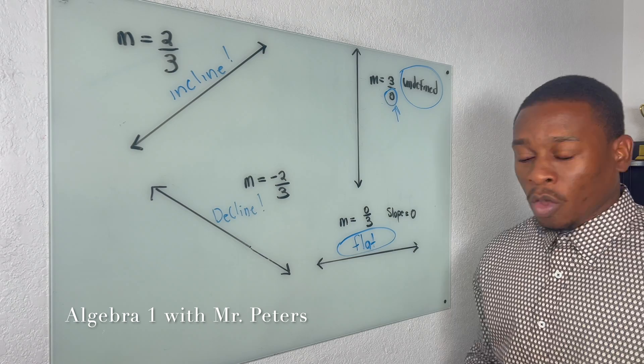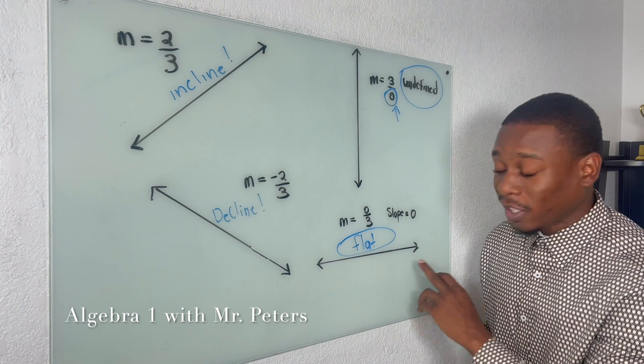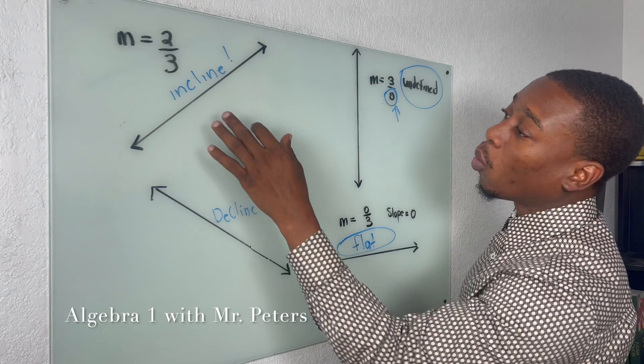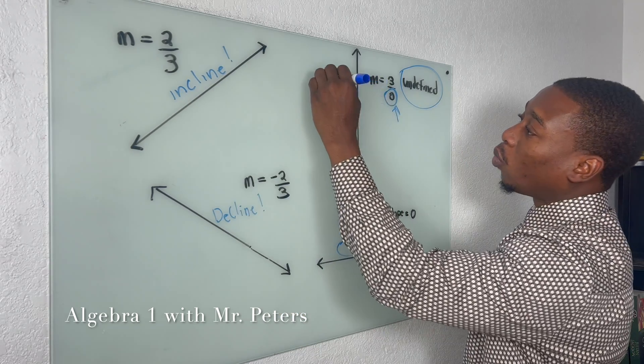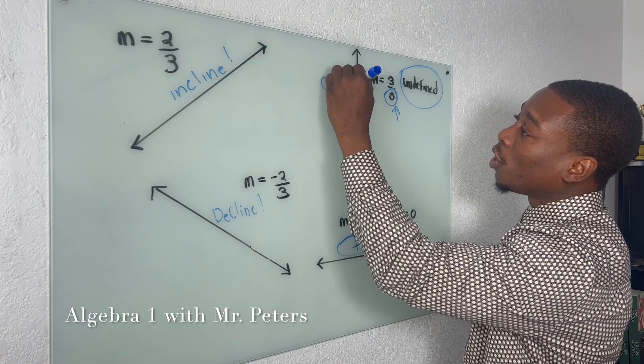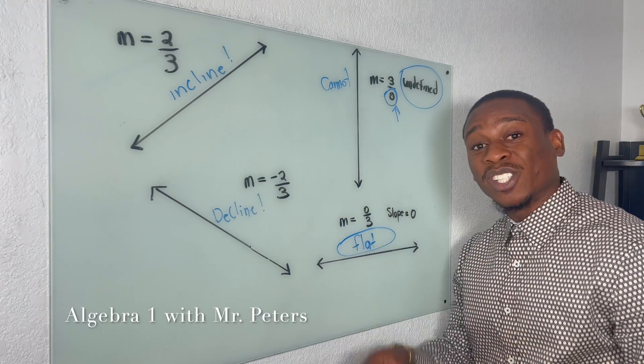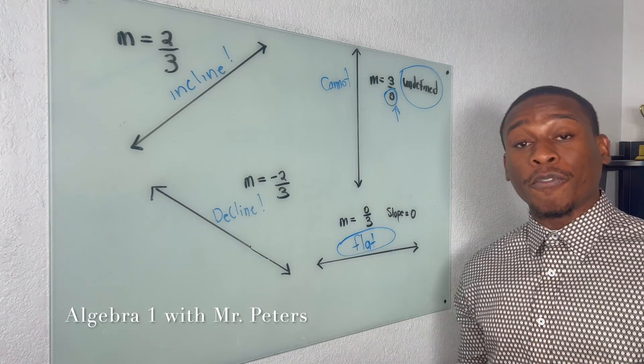So imagine when we're thinking about slope, I want you guys to think about it as how we walk, right? We either walk on a flat surface, right, that's a zero slope, that's what we do every day. We could walk on a decline, we could walk on an incline, but what we cannot do is walk up a vertical wall, like the wall that's right here in the video.